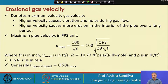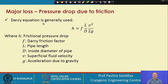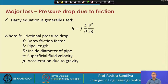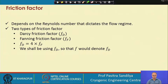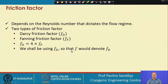The major loss is given by Darcy's equation, where head loss is expressed in terms of v²/2g — the kinetic head — multiplied by a friction factor and the L/D ratio. The head loss is thus found in terms of the loss in kinetic head of the fluid. The friction factor can be found using different expressions developed by various researchers.